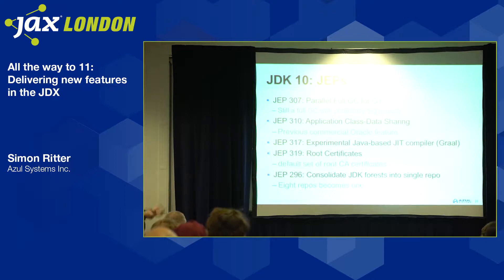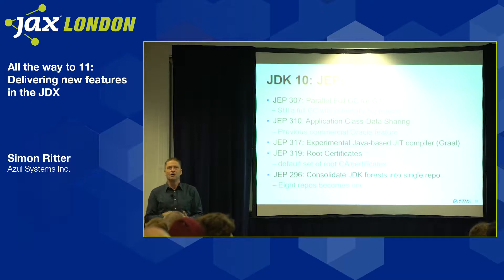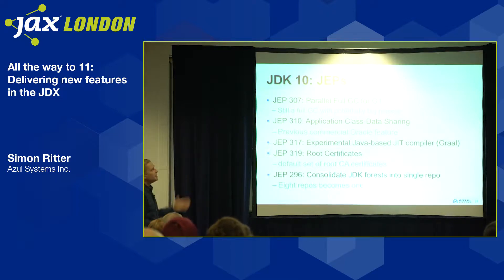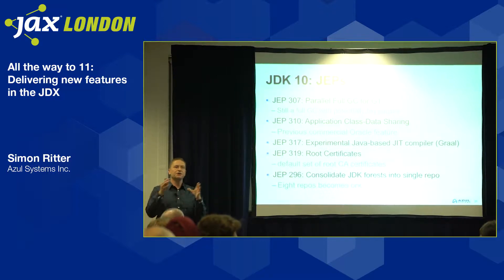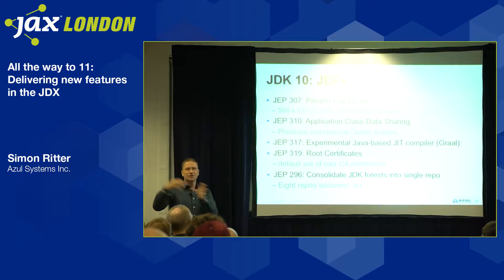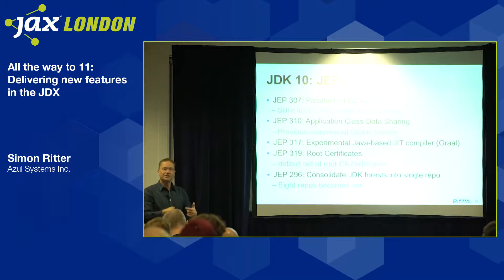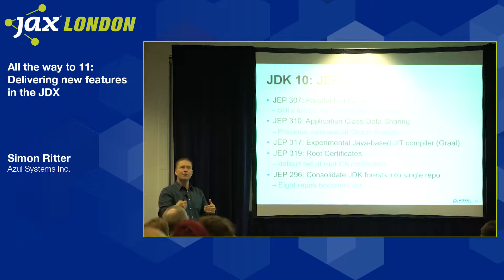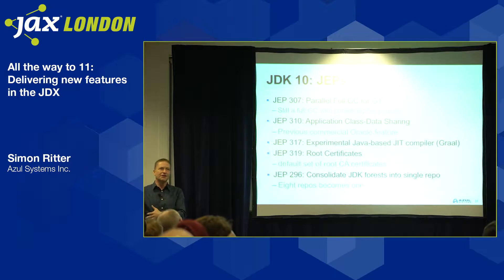There are quite a few other JEPs in JDK 10. G1 now has a parallel full GC rather than sequential — important because people were noticing performance degradation compared to the parallel collector. Application Class-Data Sharing is a nice feature for improving startup time: rather than re-reading and processing class files every startup, you record the internal data structures to a file and on subsequent startups the JVM maps that file into memory directly. You can also share those structures between multiple JVMs running the same application, reducing overall machine resource usage.